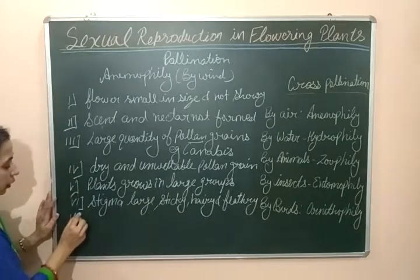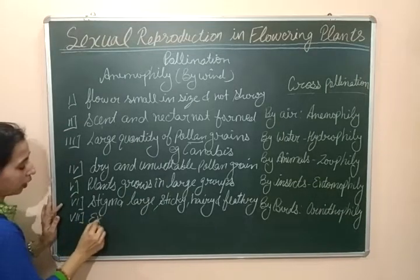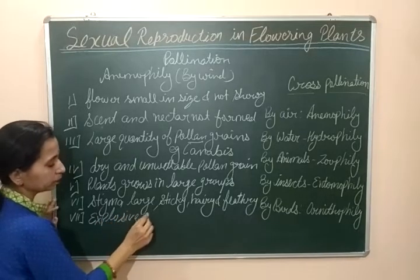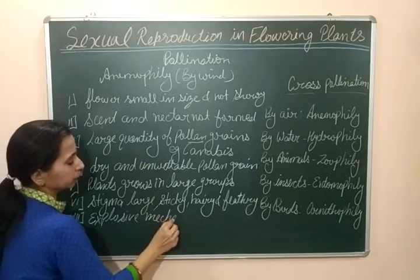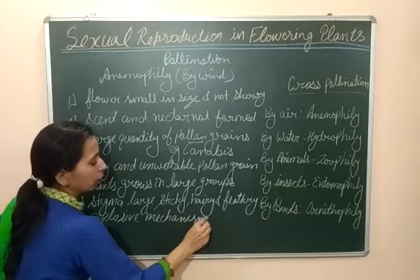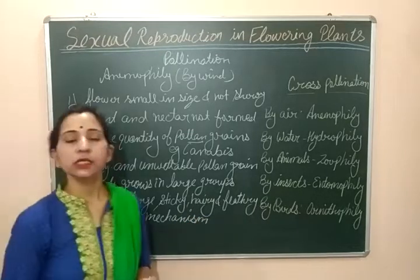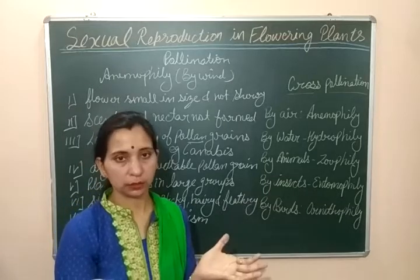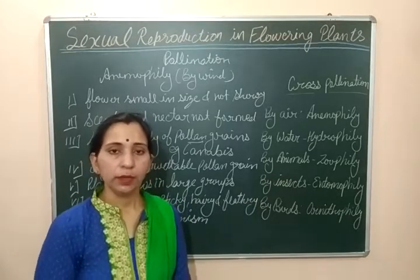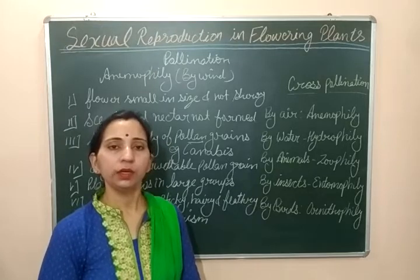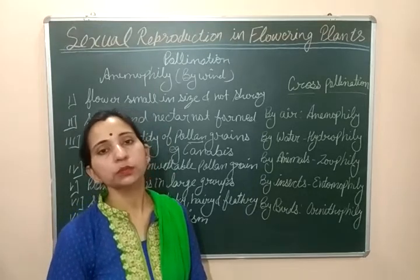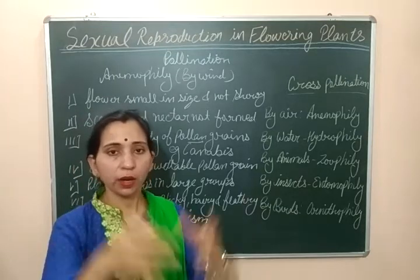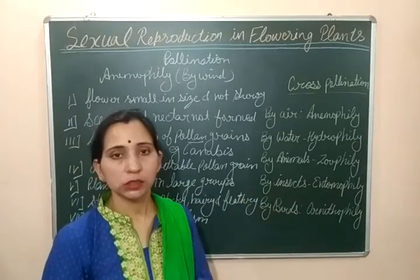The seventh important characteristic is the explosive mechanism. In flowers supporting anemophily, anthers burst with an explosive mechanism. When anthers get matured and pollen grains are ready to be released, the anthers burst with an explosion. By this explosion, the pollen grains are spread over a larger distance and can then easily fly with the air.